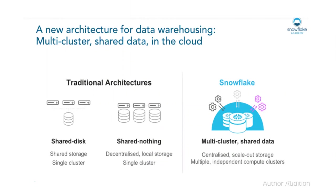The unique architecture — in traditional architecture we have shared disk and shared nothing. In shared disk architecture you have a centralized data repository and compute instances have access to it, whereas in shared nothing each compute instance stores a portion of data and processes it. In Snowflake it is a hybrid: a data repository where all compute instances have access, while compute instances may also store data locally to process it — a decoupled storage and compute architecture.